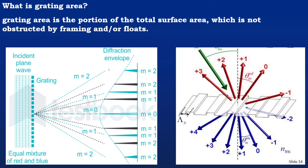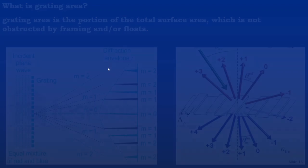What is grating area? The grating area is the portion of the total surface area which is not obstructed by frame and floats, as you can see in these diagrams. For the incident plane onwards, the diffraction is enveloped with the different orders which is 1, 2 in both the sides of the left and right from its middle.